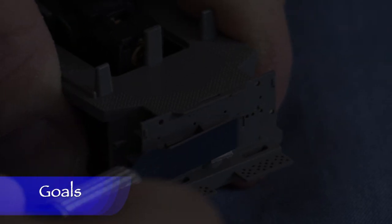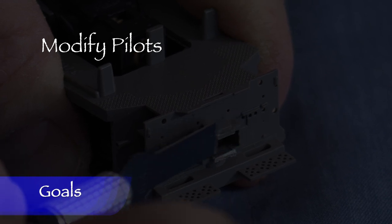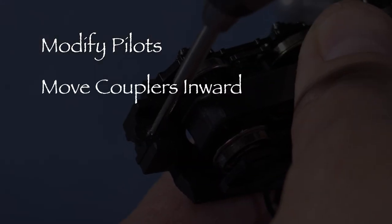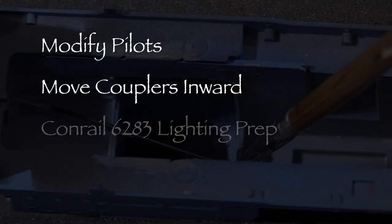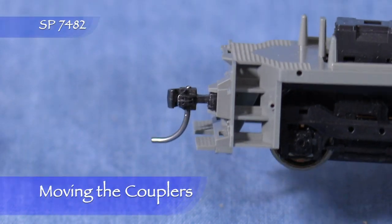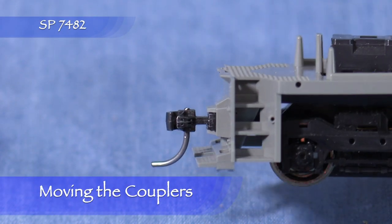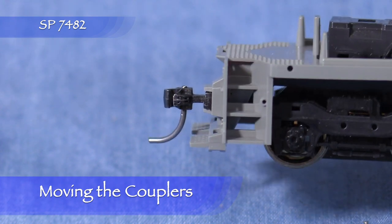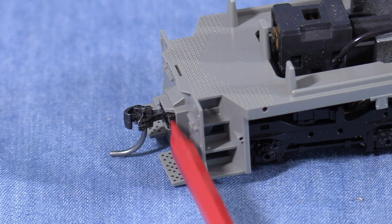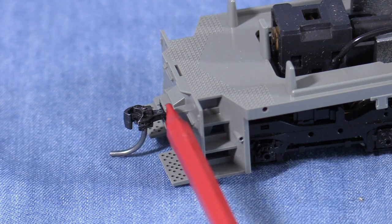In this episode, I want to modify the pilots on both Kato models, Conrail 6283 and SP 7482, move the couplers inward on both of those models, and prepare the shell of the Conrail SD40 for lighting. On stock Kato GP35, SD40 and SD45 models, the coupler sticks out too far from the pilot. I want to move the coupler box inward so that the coupler is in a more prototypical location.